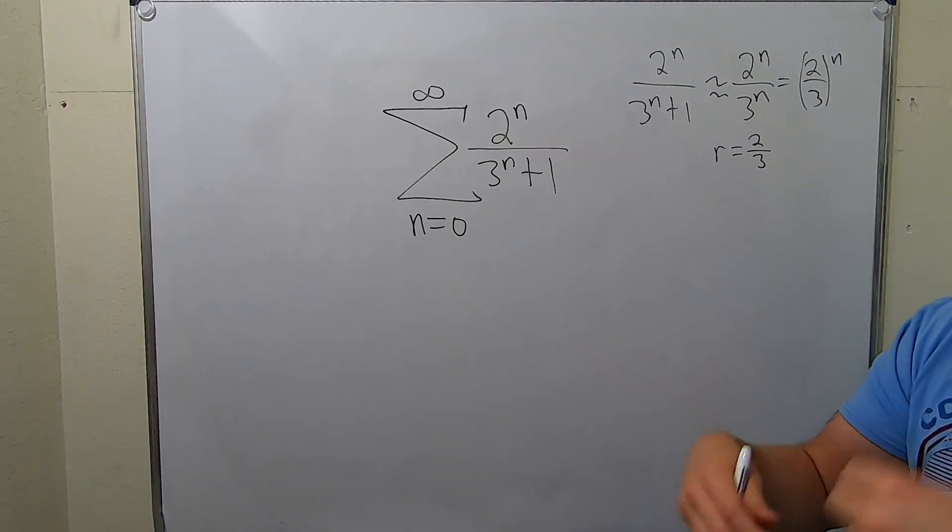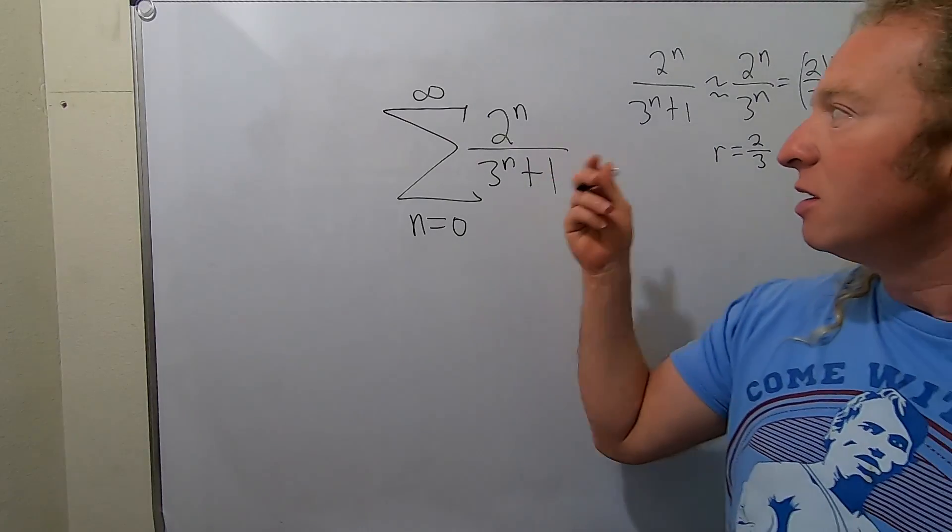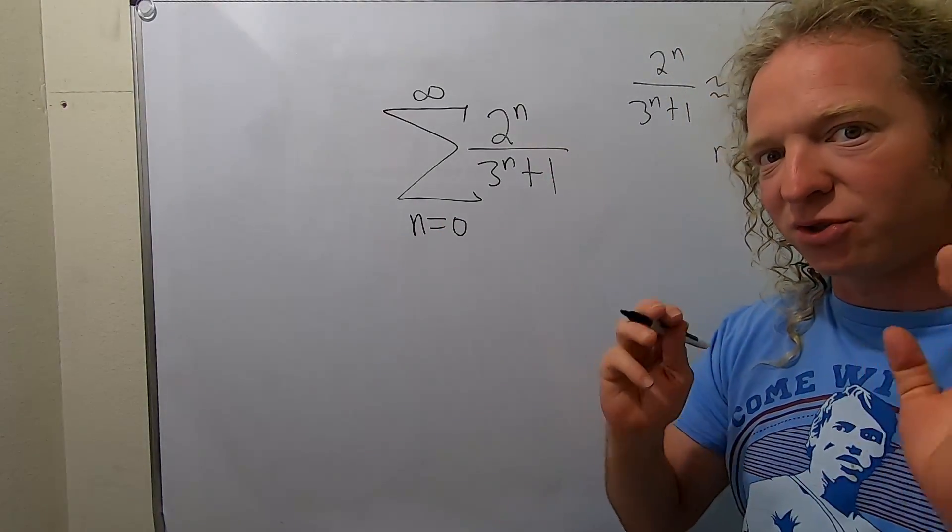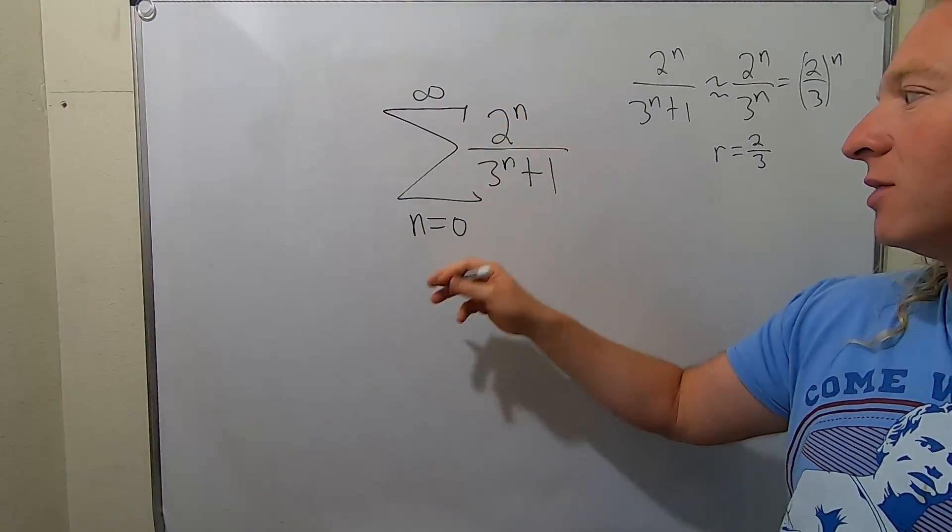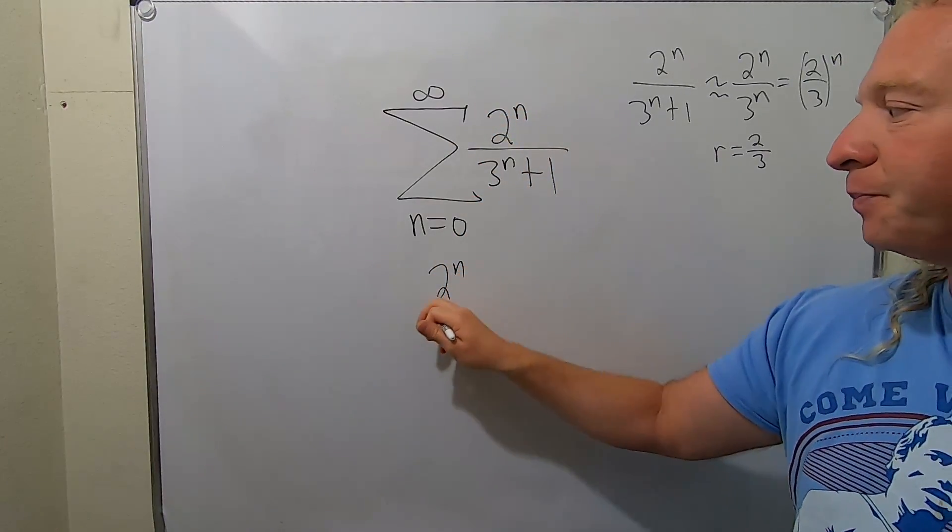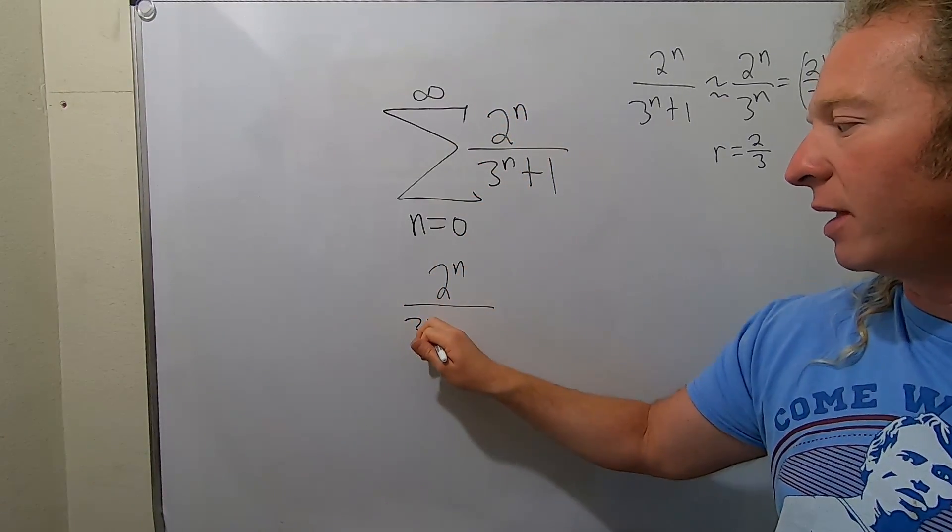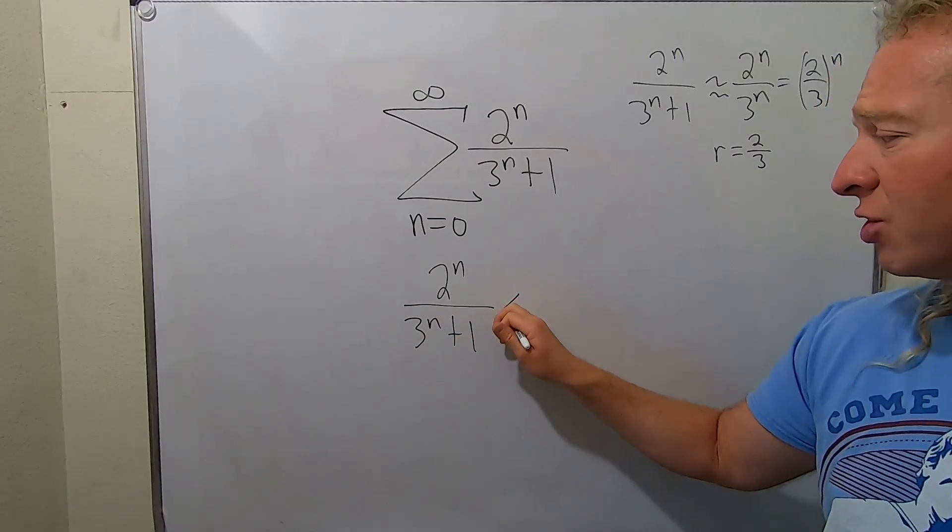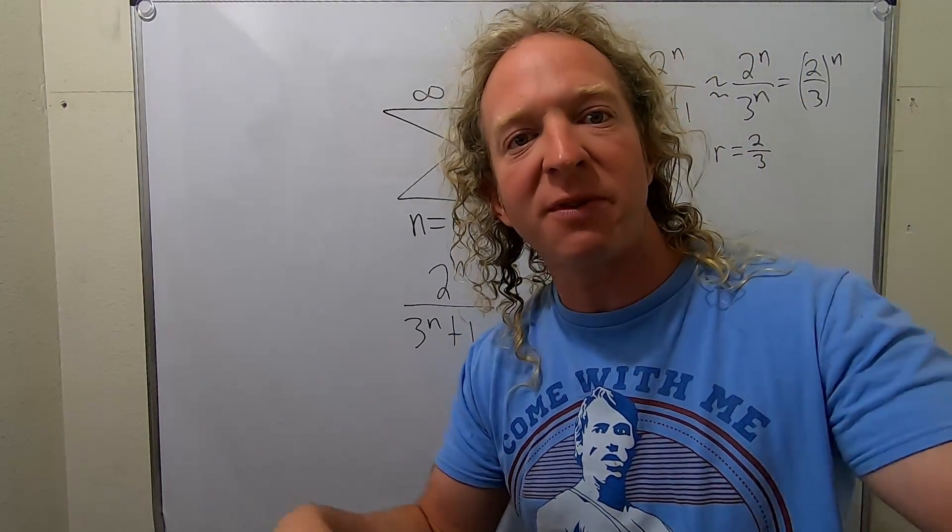So now let's use direct comparison to try to show convergence. So to use direct comparison to show convergence, you always just write this down. So 2 to the n over 3 to the n plus 1. And you want to show that this is less than the terms of something that will converge.